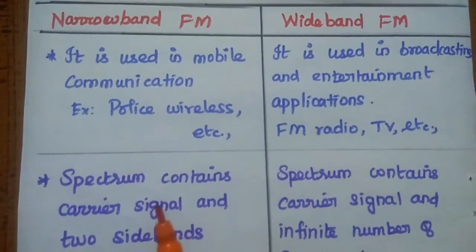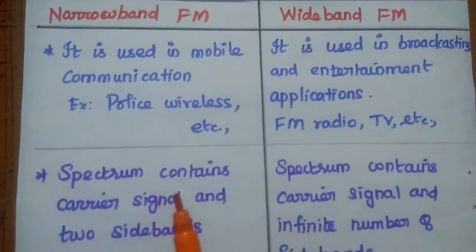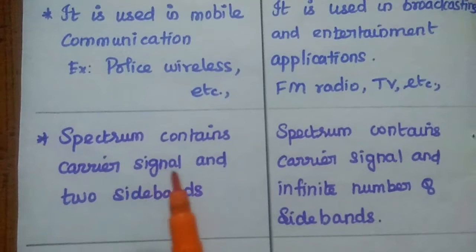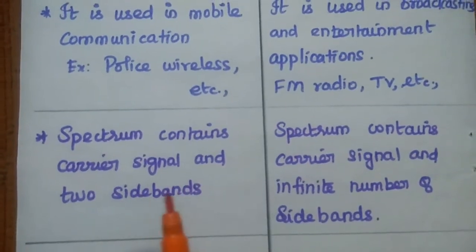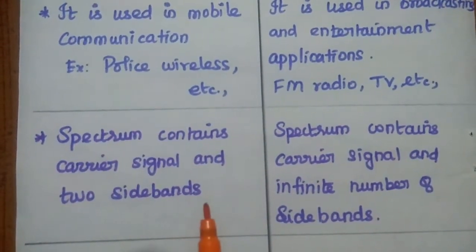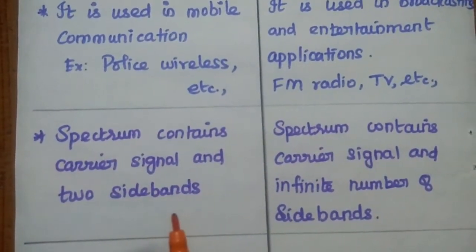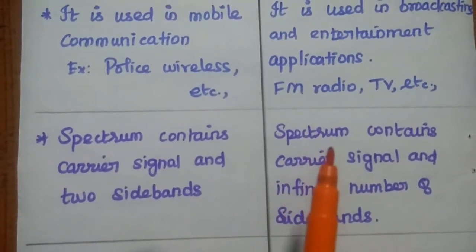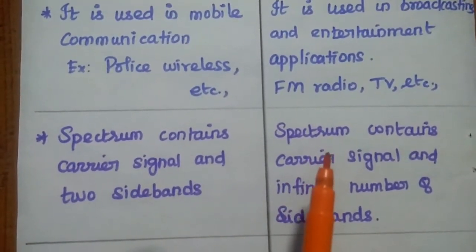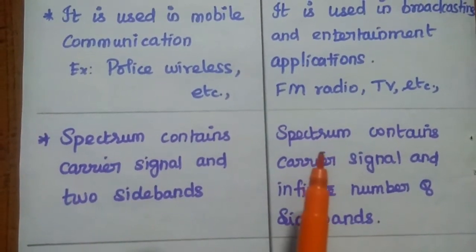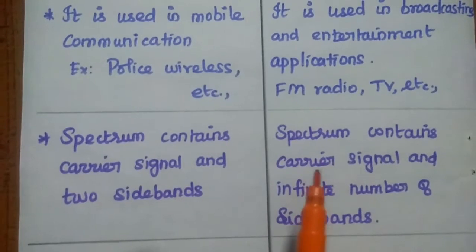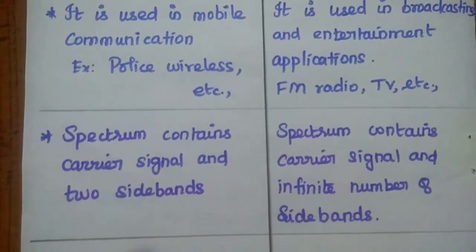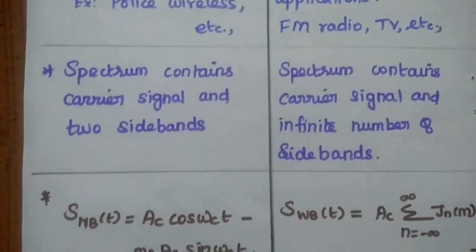The spectrum of narrowband FM contains a carrier signal and two sidebands, simply like amplitude modulation. But in wideband FM, the spectrum consists of the carrier signal and an infinite number of sidebands.